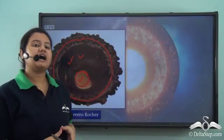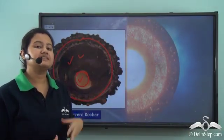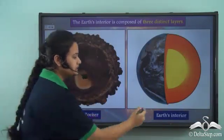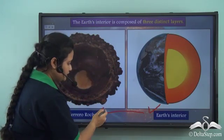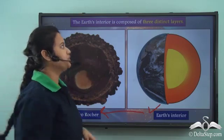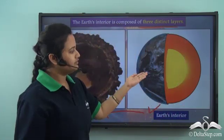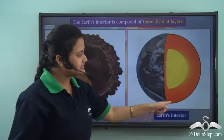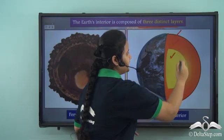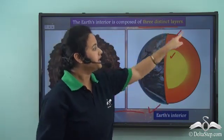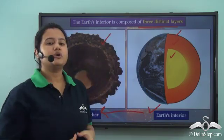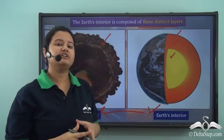Just like this chocolate, our Earth's interior also has a similar structure — it is composed of three distinct layers. The outer surface of the Earth is very hard, just like the hardened chocolate filled with nuts.